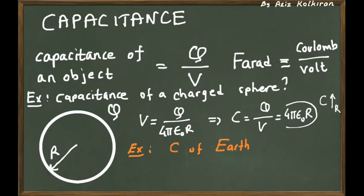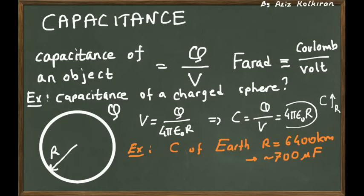What about the Earth? The Earth is not a conductor, but if you think of Earth's surface as having conducting material, you can calculate its capacitance. Earth's radius is 6,400 kilometers. The capacitance of a metal sphere the size of Earth is about 700 microfarads. An object as large as Earth has only 700 microfarads, where micro is 10⁻⁶. So one farad is a very, very large quantity in terms of capacitance.